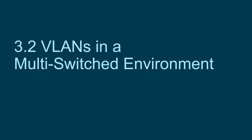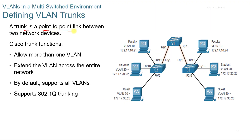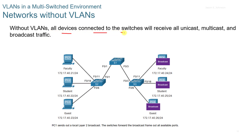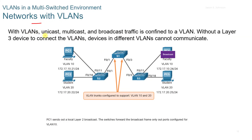3.2 VLANs in a multi-switched environment. A trunk is a point-to-point link between two network devices. Cisco trunk functions include allowing more than one VLAN, extending the VLAN across the entire network, and by default supports all VLANs and 802.1Q trunking. In networks without VLANs, all devices receive unicast, multicast, and broadcast traffic. In networks with VLANs, that traffic is confined to the particular VLAN, so without a layer 3 device to connect the VLANs, devices in different VLANs cannot communicate with each other.